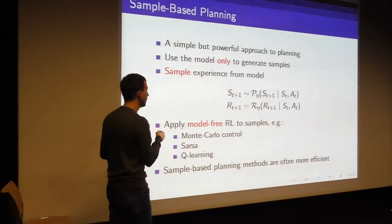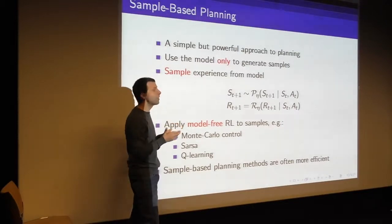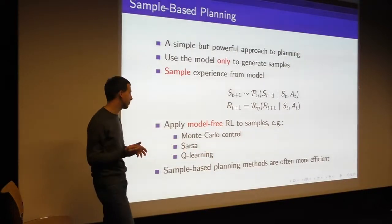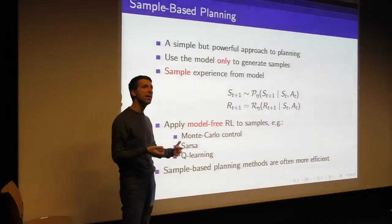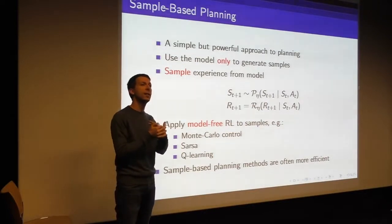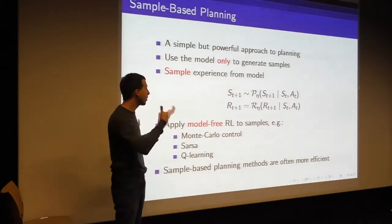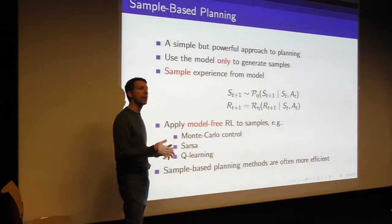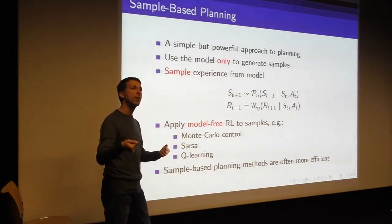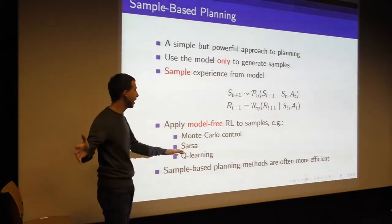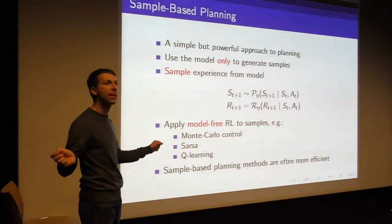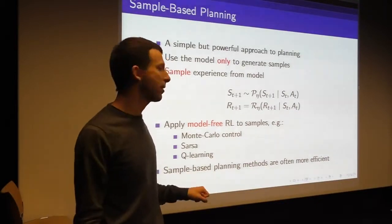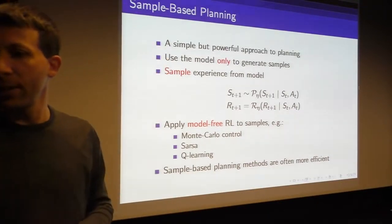It turns out that we've given something up — we've given up these probabilities — but that actually sometimes, often, gains us something. It gains us efficiency because we don't have to consider all possibilities; it breaks the curse of dimensionality. Even if we have the model in our hands, it's often a good idea to sample from that model, because by sampling we focus on the things that are more likely to happen rather than doing naive full-width look-ahead where we consider all events, even low-probability ones. So sample-based planning methods are often much more efficient.